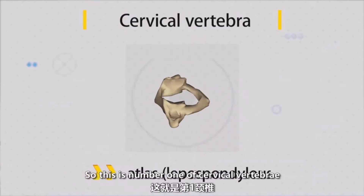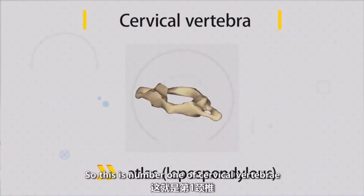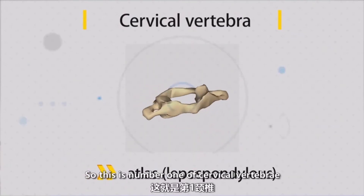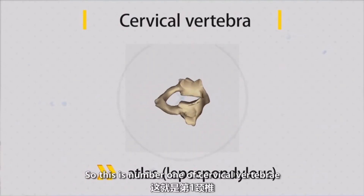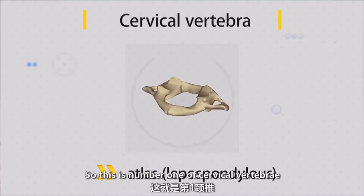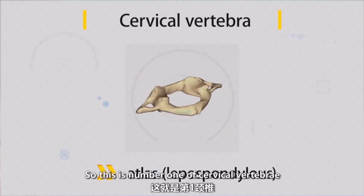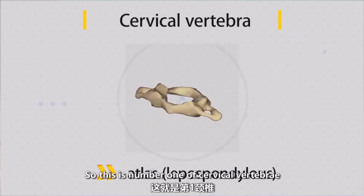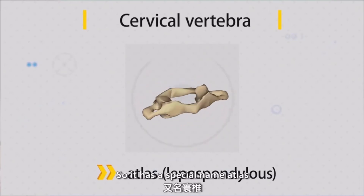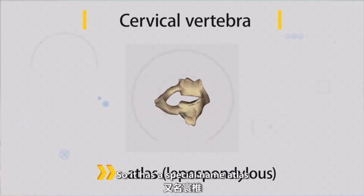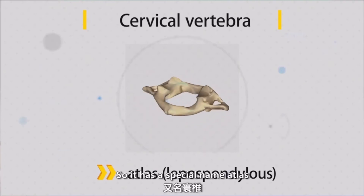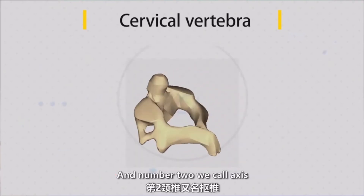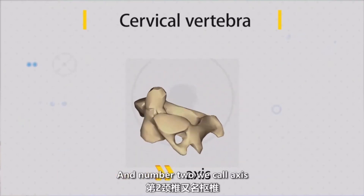This is number one — the number one cervical vertebra — and it has the special name: atlas. And then number two, we call the axis.